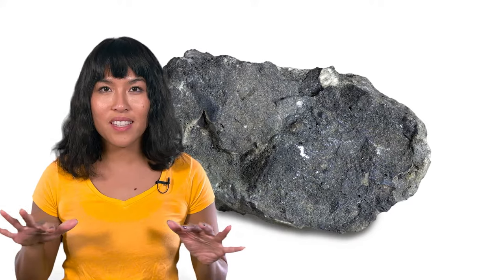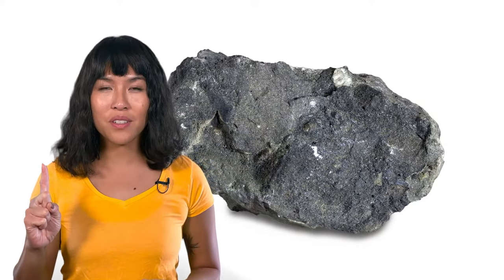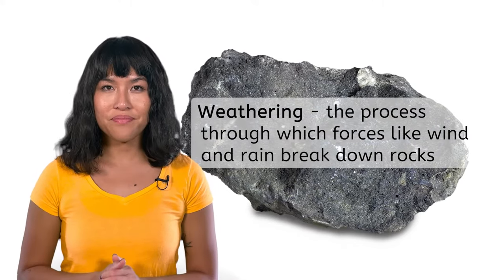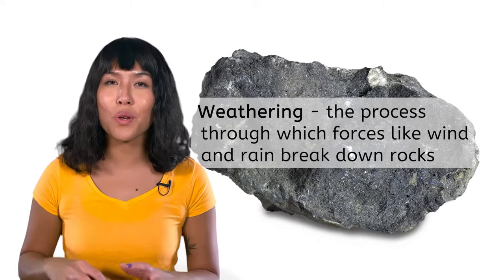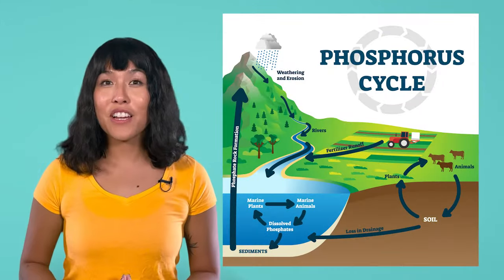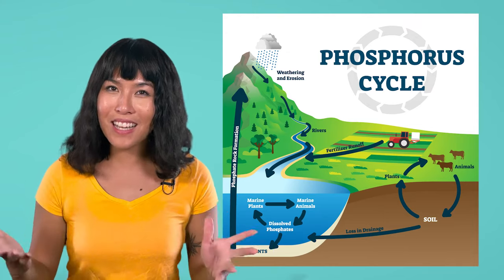The rocks on Earth's surface have tons of phosphorus in them. In the first step of the phosphorus cycle, these rocks are slowly broken apart by forces like wind and rain — this process is called weathering. Then the phosphorus from the rocks mixes into soil in the ground, after which it's absorbed by plants. Even underwater plants absorb phosphorus from the sea floor. Once the phosphorus has been absorbed by plants, it continues to move through the biosphere when animals eat these plants. Then, when these plants and animals die and decompose, the phosphorus they took in returns to the soil and water. Eventually, this phosphorus will be compressed back into rocks, and the cycle starts again.